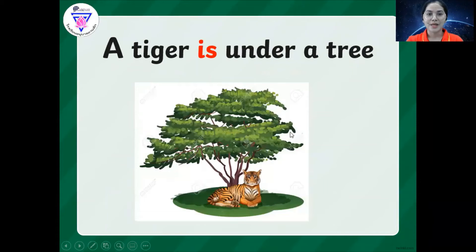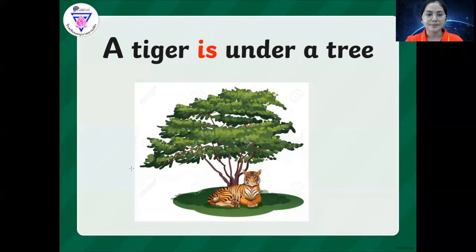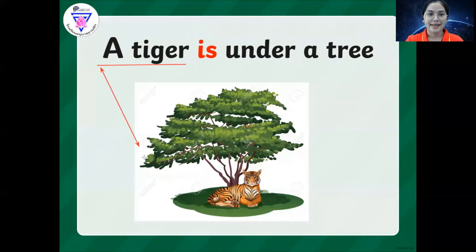Okay, so now we are going to incorporate those vocabularies and the sight words that I taught you. Let's do this. For example, a tiger. So where is the tiger? Can you see the tiger? Yeah, so the tiger is here.